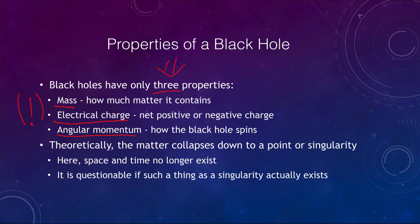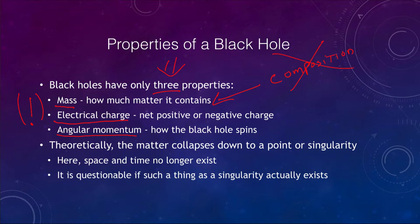There is nothing else that we can know about a black hole other than these three things, which makes them relatively simple objects to understand. We don't have to worry about compositions. We honestly cannot tell the difference if a black hole were made up of hydrogen, iron, uranium, or any other element — we would not be able to tell the difference. Everything depends only on the mass, not what the mass is made of, so composition does not matter.